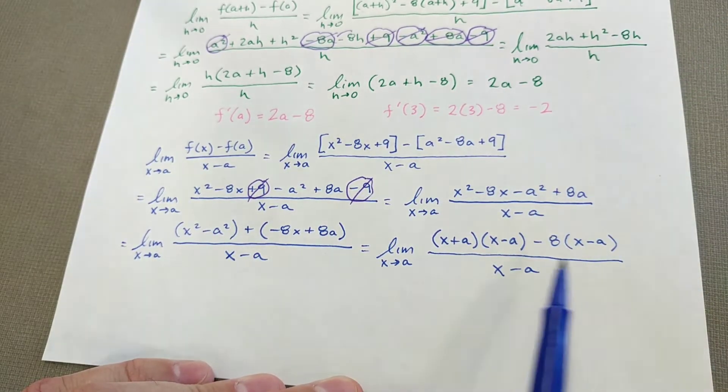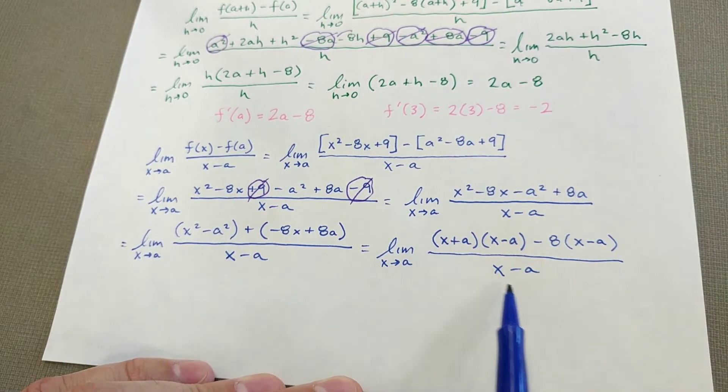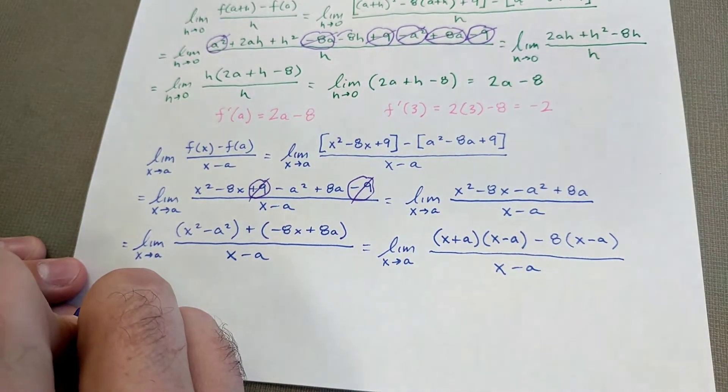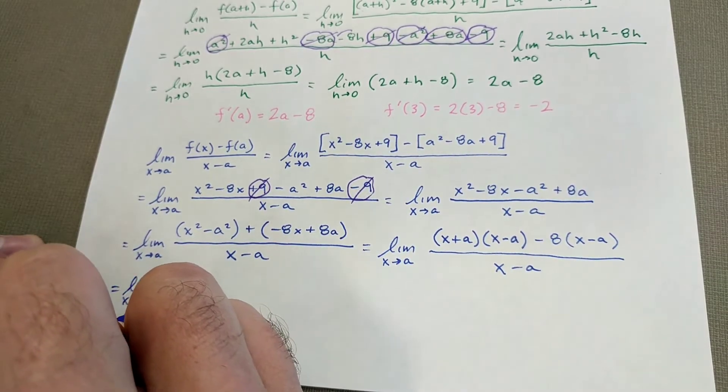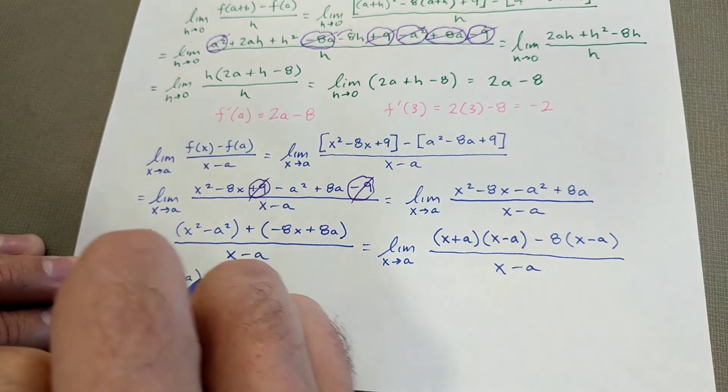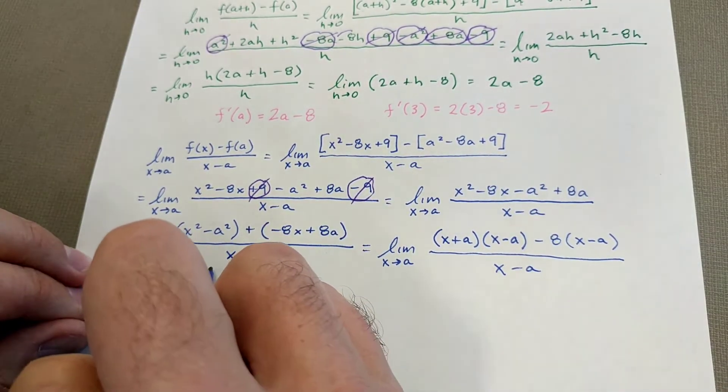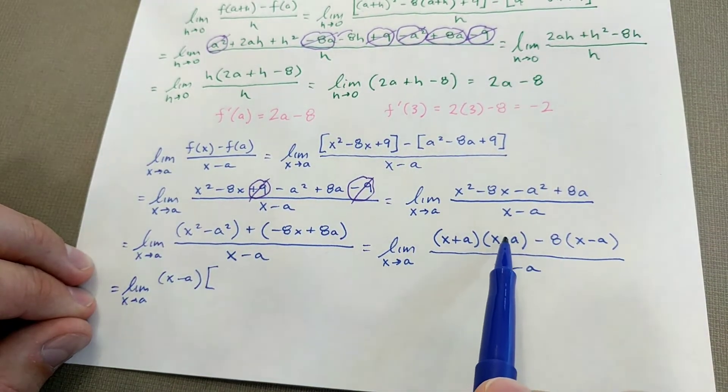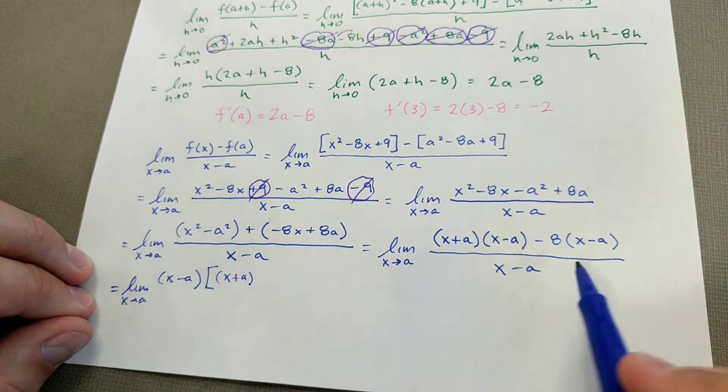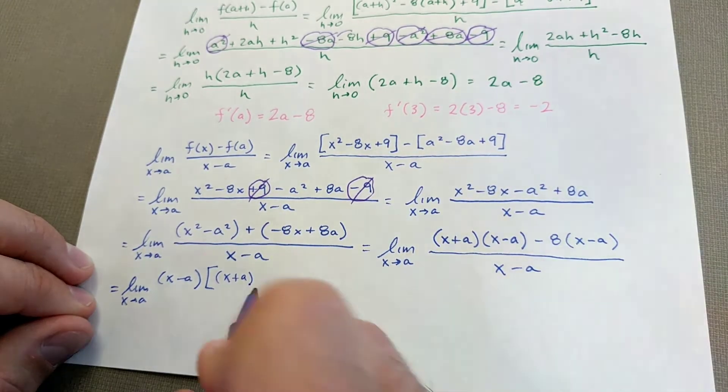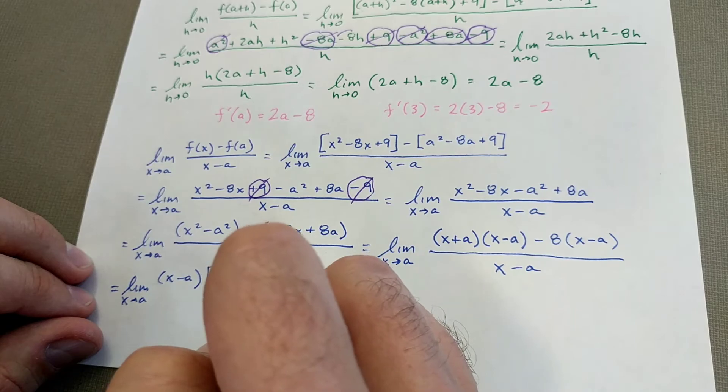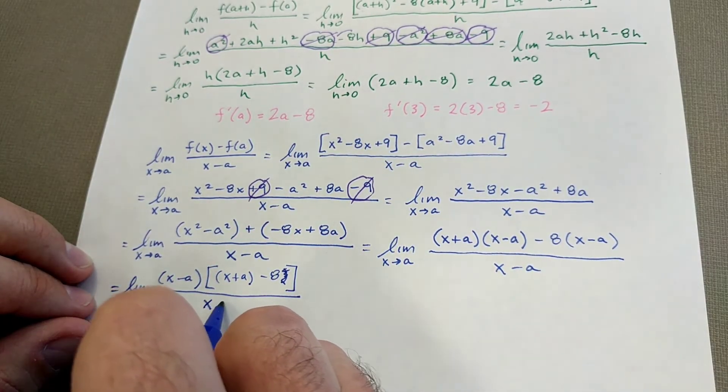At this point, these are a common factor now. So these two terms both have an X minus A in common. So you can factor that out. A different approach would be to split the fraction. But I like to factor it out. So X approaches A. So I'm going to factor the X minus A from each of those. So what does that leave behind? Well, if I factor this out, I'm left with X plus A. If I factor this out, I'm left with negative 8. All over X minus A. Now these divide to 1.